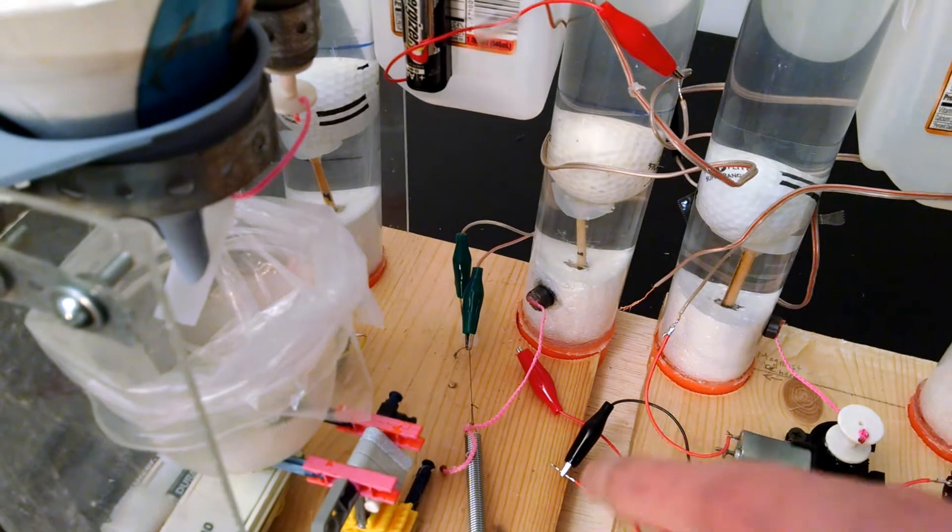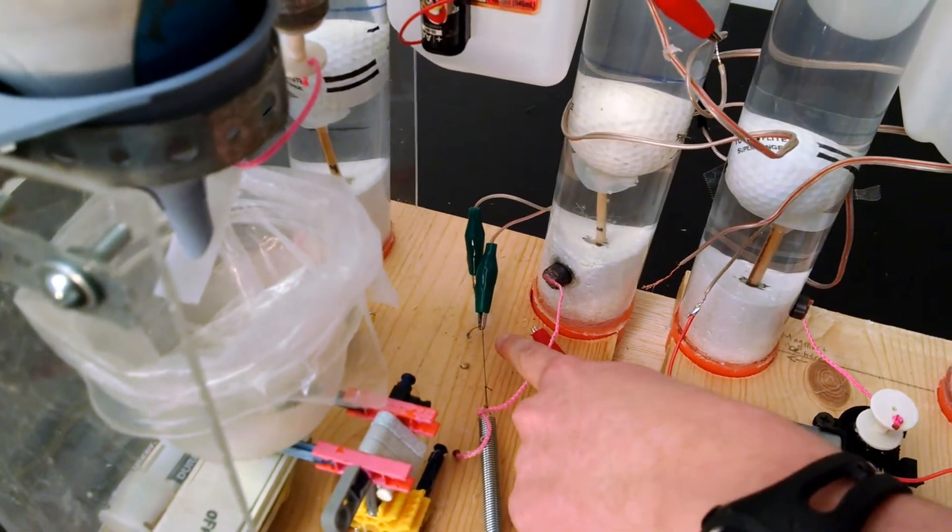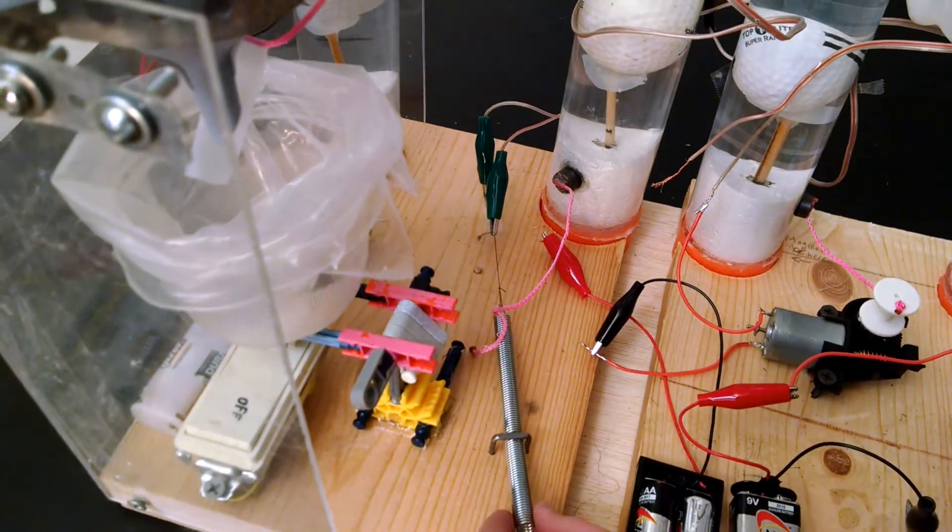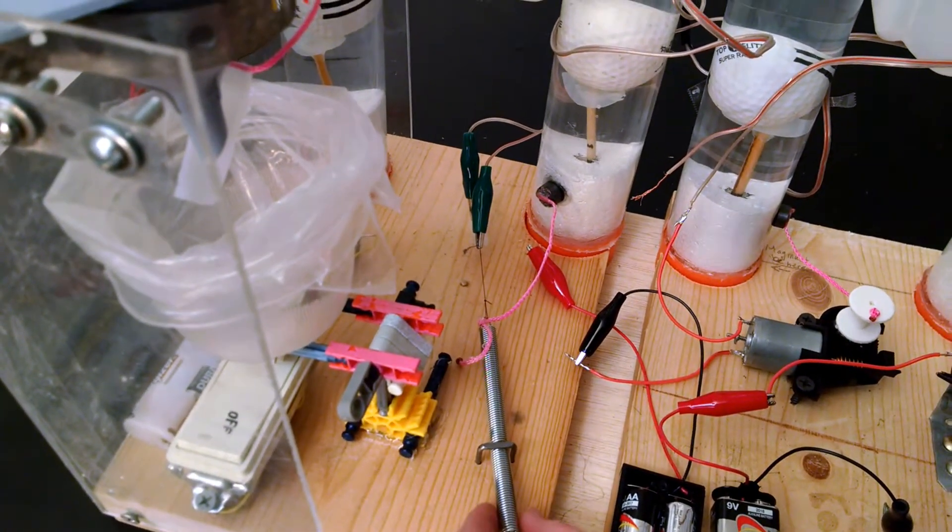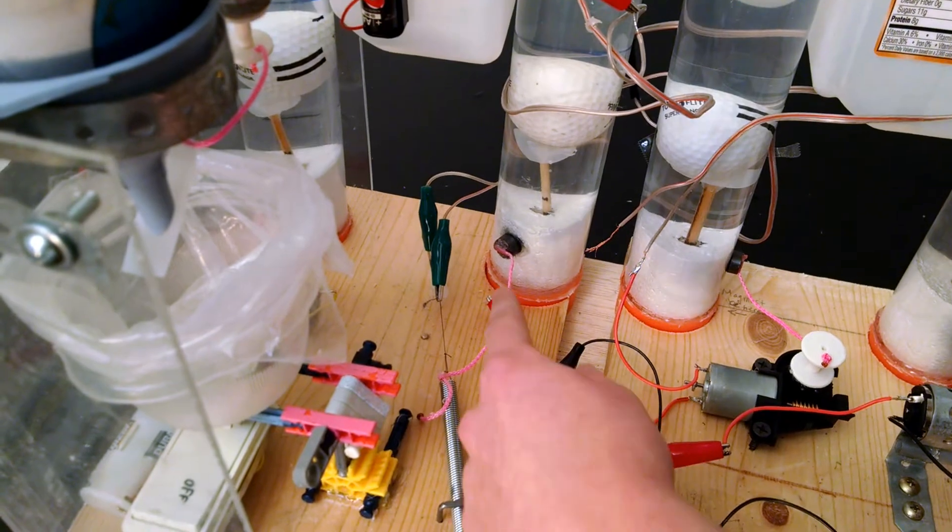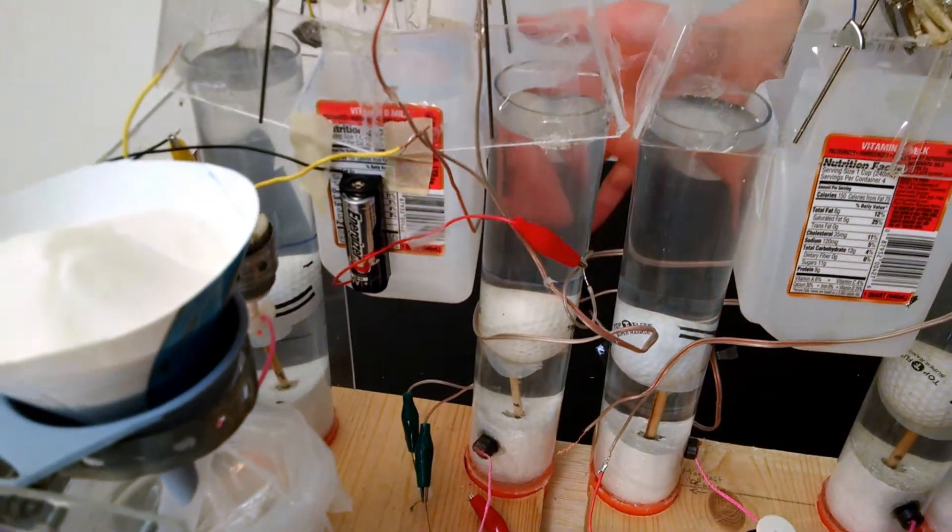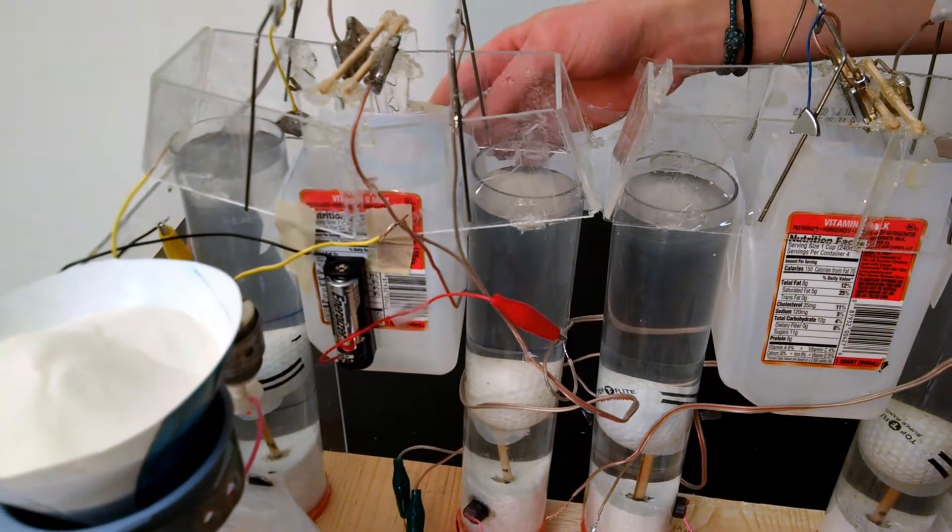This magnetic switch will trigger another steel wool fuse which will burn through this string releasing this tensioned spring which will compress pulling this magnet away letting this float and golf ball rise up.